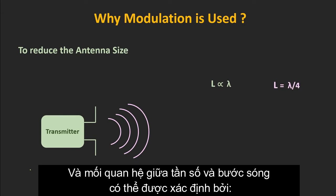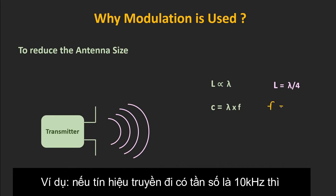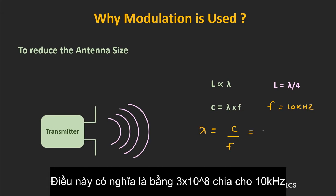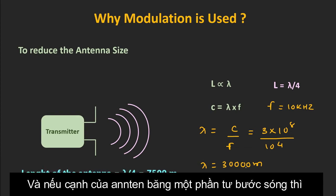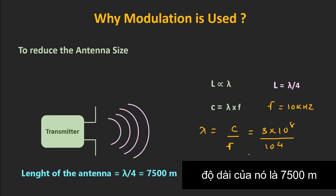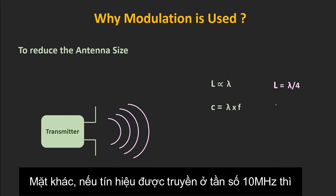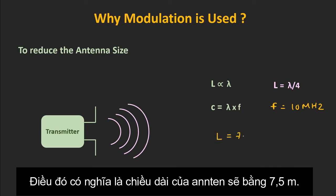The relationship between frequency and wavelength is given by λ = c/f. For example, if the transmitted signal has a frequency of 10 kHz, then its wavelength will be equal to 3×10⁸ m/s divided by 10 kHz, which comes out as 30,000 m. If the size of the antenna is a quarter of the wavelength, then the length of the antenna will be around 7,500 m. This size is actually impractical. On the other hand, if the signal is transmitted at 10 MHz, the antenna length reduces by a factor of 1,000 — down to 7.5 m, which is manageable.